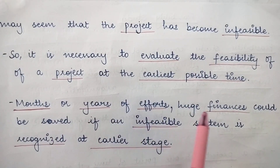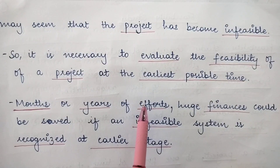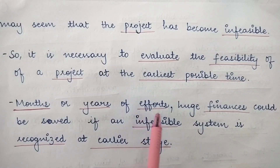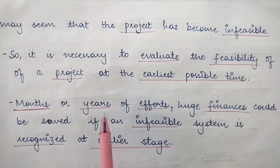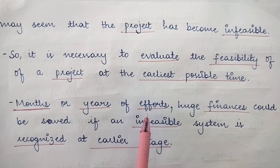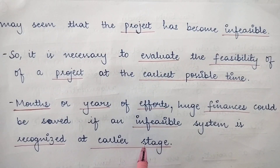Months, years of efforts, and huge finances could be saved if an infeasible system is recognized at an earlier stage. Because if we do not identify whether this particular information system is going to be feasible or not, then we would be wasting months or years of effort and so much finance. We can avoid that wastage if we identify that a project is infeasible at the earlier stage itself.